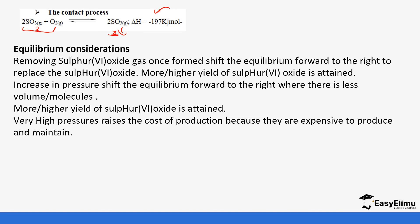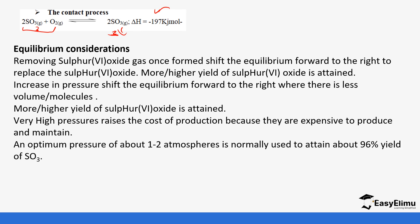Very high pressures are also very costly, so they settled for optimum pressures of 1 to 2 atmospheres, which typically gives a yield of around 96%.